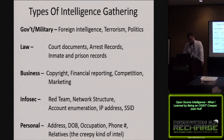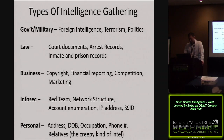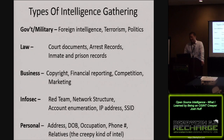OSINT is broken down in a couple different areas that make it interesting to a lot of different people. Government and military are going to be paying attention to information for foreign intelligence, stuff on terrorism and politics. In law, we're going to see court documents, arrest records, inmate and prison records. Business will see copyright information, financial reporting, competition and marketing. The security community — red teaming — will look at network structures, account enumerations, IP addresses, SSIDs. And then there's the personal stuff: addresses, date of birth, what you do for a living, who your family is. That's the creepy stuff.